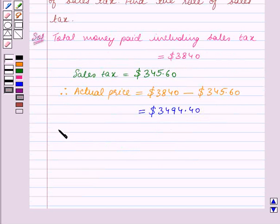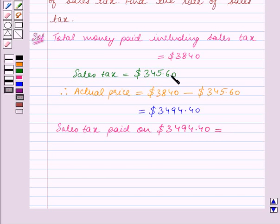So we get sales tax paid on the actual price which is $3,494.40. This is equal to $345.60 which is given to us.